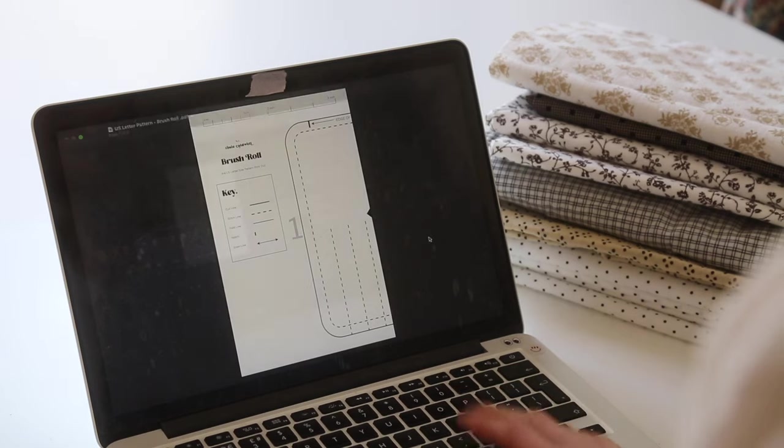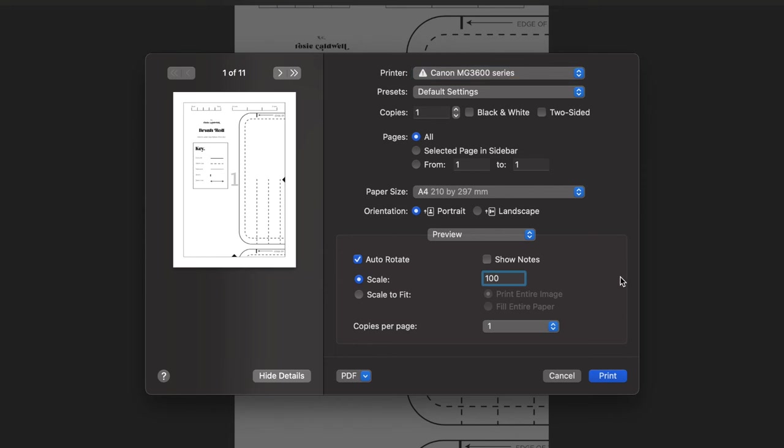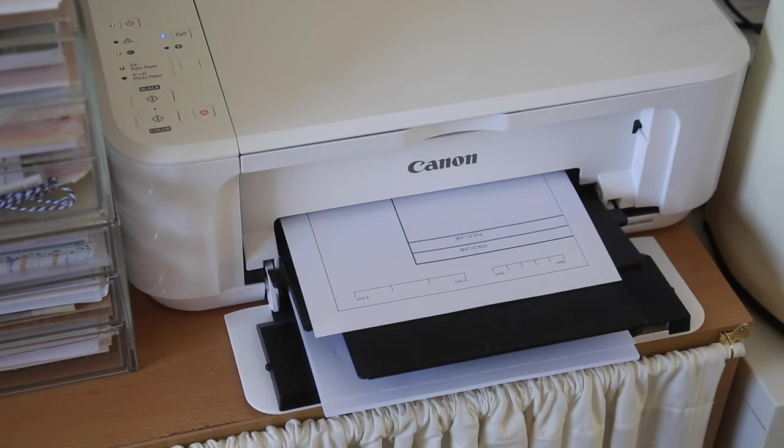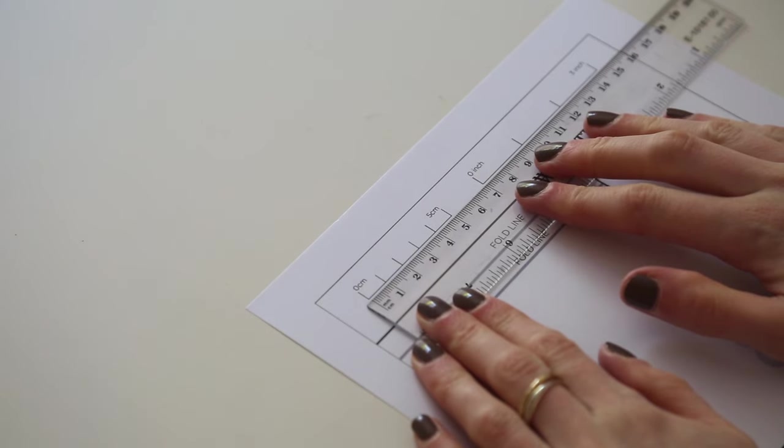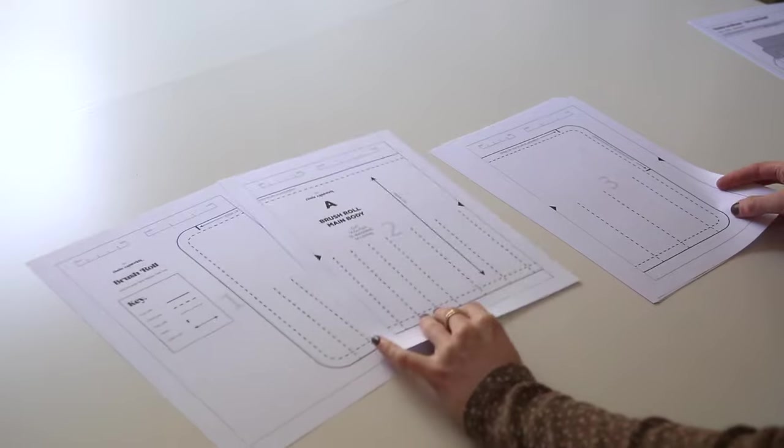I'm just going to quickly show you how to print out the pattern if you do decide to download it. So the file I've got open here is compatible with A4 or US letter size paper. You just need to make sure the scale is set to 100%. It's not double-sided and I like to print out one page to start with just to check the size and then I go ahead and print the others. Then just go ahead and print out the rest of the pattern.